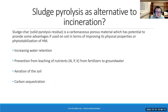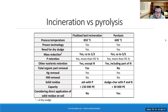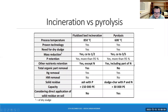Produced sludge char can bring several advantages when applied on soil. It can potentially increase the water retention of the soil, prevent leaching of nutrients from fertilizers to groundwater, aerate the soil because it is a porous material, and another benefit is carbon sequestration. Briefly comparing these two technologies, unlike incineration, part of nitrogen remains in the sludge char. Also, pyrolysis can be suitable even for smaller locations based on the capacity of the wastewater treatment plants.